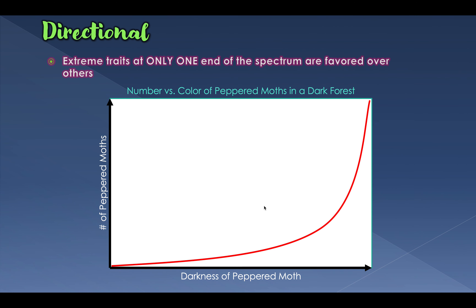Looking at the graph for a dark forest, the y-axis shows the number of peppered moths. On the light end of the spectrum we have very few moths, and as we move toward darker moths, we have significantly more. Dark moths in a dark forest are the ones able to blend and survive, so we have very few light moths at that end of the spectrum.